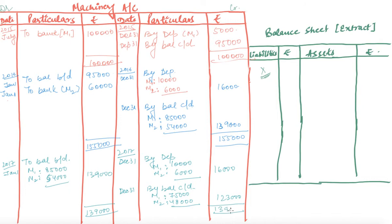With this, our machinery account is complete. We have shown the depreciation treatment for three years: 2015, 2016, and 2017. Now we move on to prepare the balance sheet.